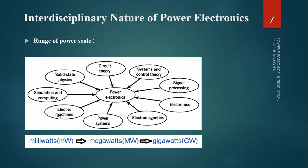The different interdisciplinary fields related to power electronics include electric machines, where a huge amount of power is required to run machines — for example, a hydropower plant requires a huge amount of voltage just to run the turbines. Then we have power systems, where all circuit elements are arranged properly and the amount of power required is again very high. Then electromagnetics, electronics, signal processing, and control theory.